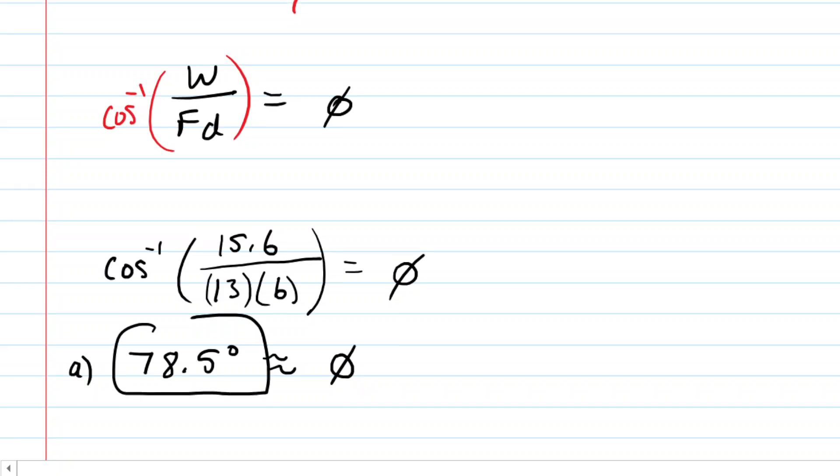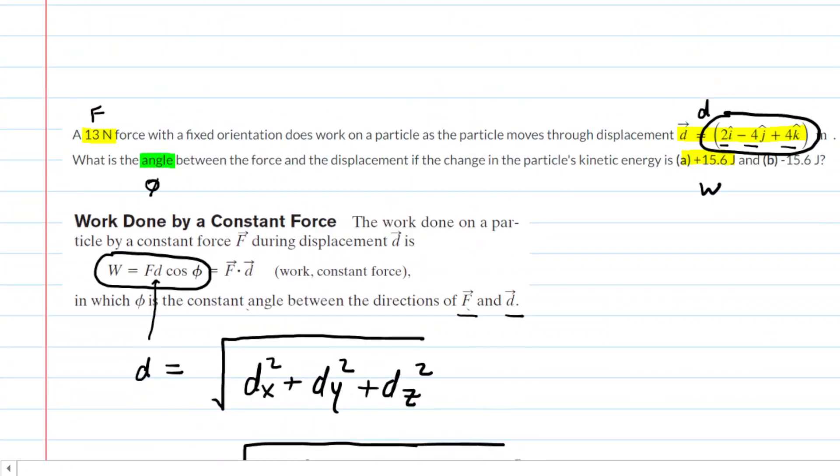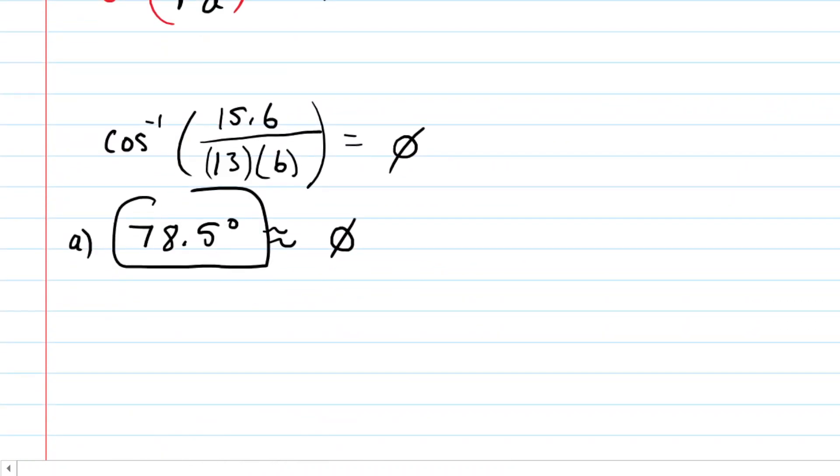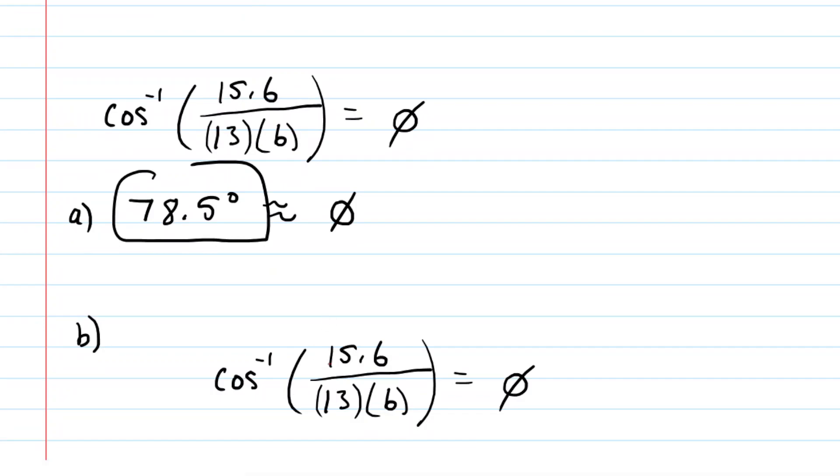We scroll back up to see what part B is requesting, and in part B, the only thing that they have changed is the amount of work done. It's now negative 15.6 joules rather than positive 15.6 joules. Otherwise, the question is the same.